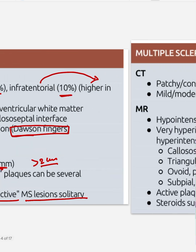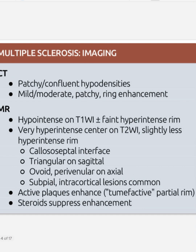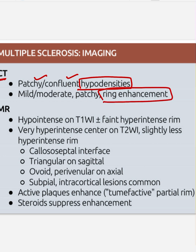In about 30% of tumefactive cases, the lesion will be solitary. On CT scan, there will be focal or confluent hypodensity with mild to moderate edema and ring enhancement. On MRI, lesions are hypointense on T1-weighted images with a faint hyperintense ring around them.